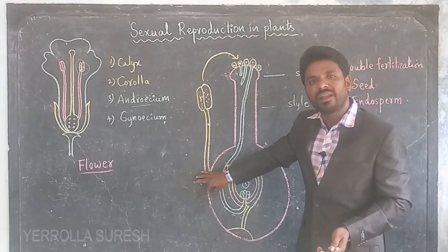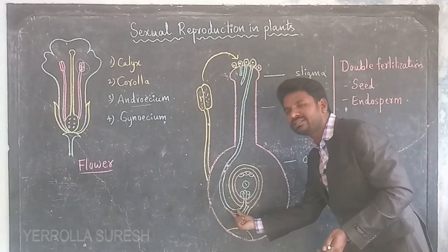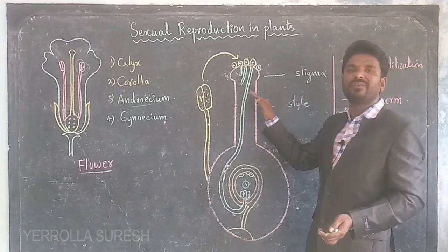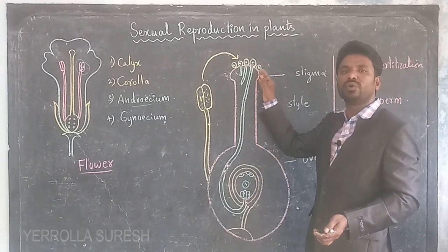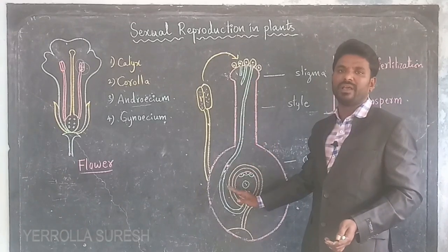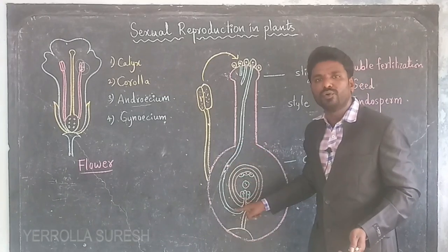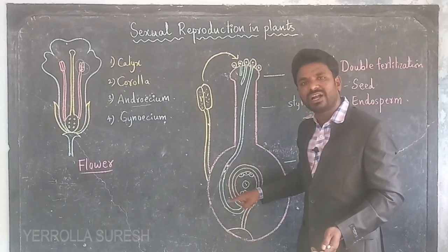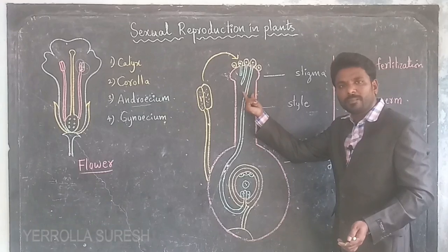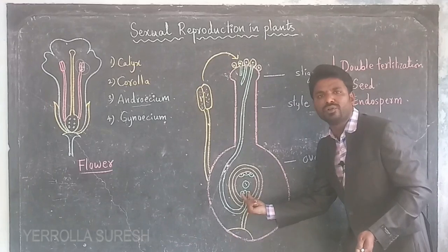The pollen tubes grow inside the ovary through the style. Finally, the pollen tube enters the ovary and then enters an ovule through the hole called the micropyle. The pollen tube, developed from the pollen grain, comes into the ovary and enters into the ovule through the micropyle.